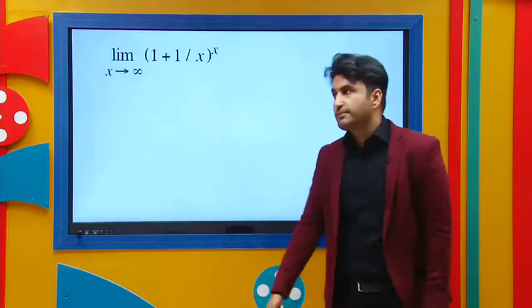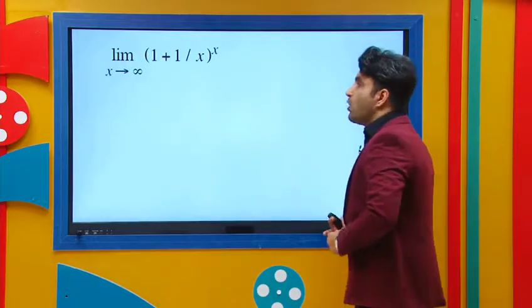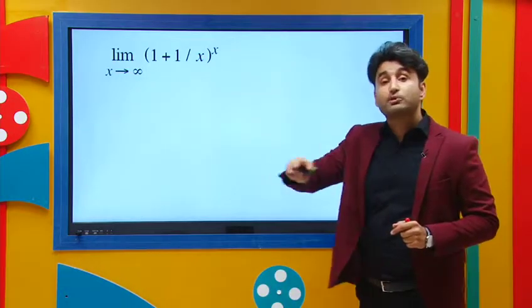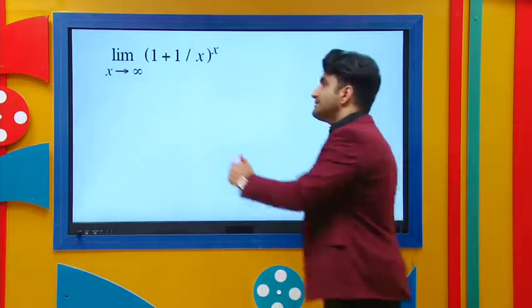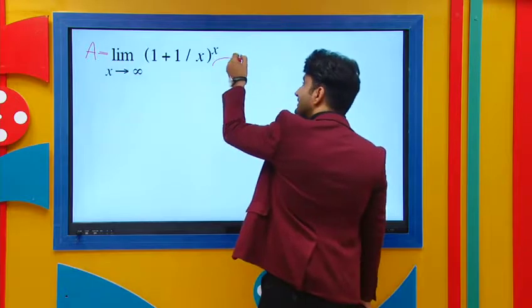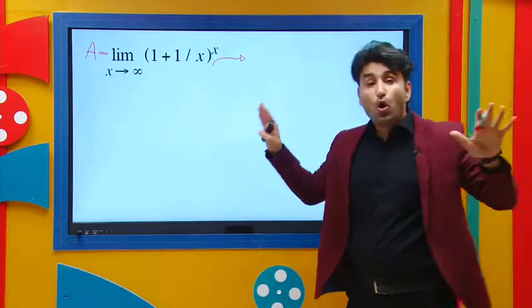Let's go to problems. Evaluate this limit: (1 + 1/x)^x as x approaches infinity. Step one says set the limit equal to A and then take natural log from both sides of the equation.